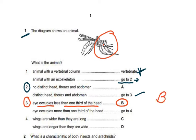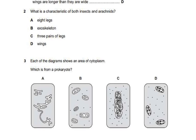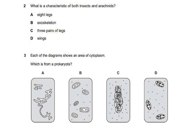Question two: what is a characteristic of both insects and arachnids? The choices are eight legs, exoskeleton, three pairs of legs, and wings. Insects do not have eight legs; arachnids do not have three pairs of legs; arachnids have no wings. The only characteristic shared by both is an exoskeleton, so the answer is B.